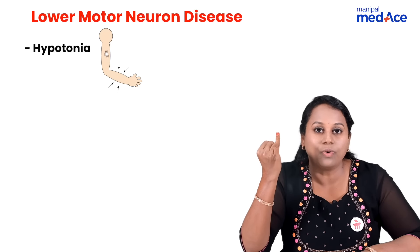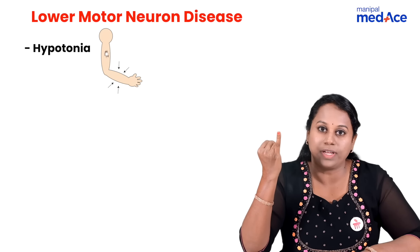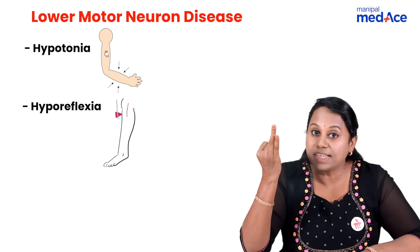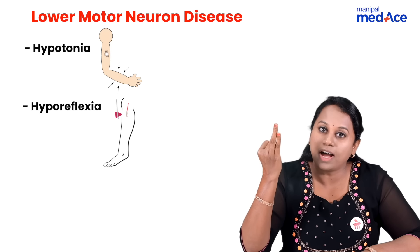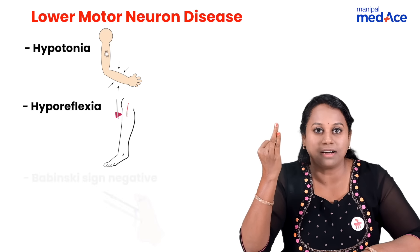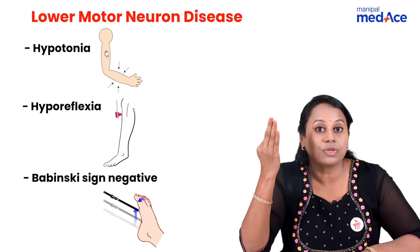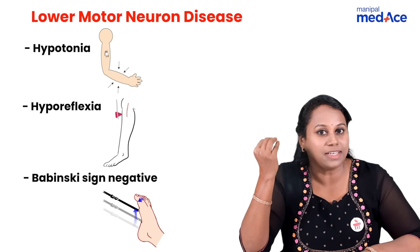Lower motor neuron disease — three things are low. Tone is low: hypotonia. Reflexes are low: hyporeflexia. And toes go low — Babinski sign negative.